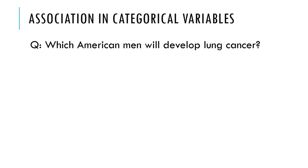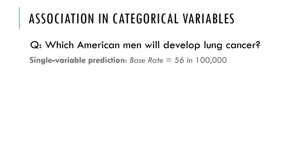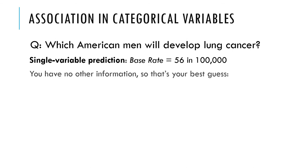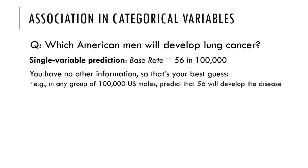Let's follow this through with an example. Which American men will develop lung cancer? A single-variable prediction where all we know is the base rate: about 56 in 100,000 American men are going to develop lung cancer. So if you have no other information, that's your best guess. In any group of 100,000 U.S. males, you should predict that 56 of them will develop lung cancer.